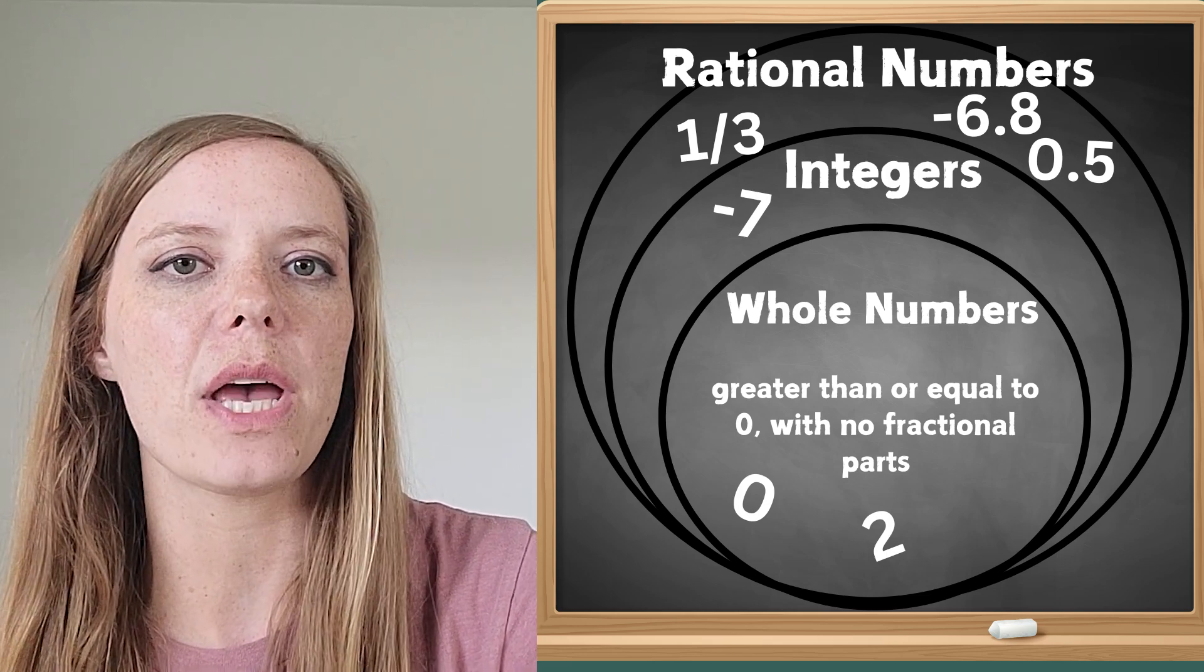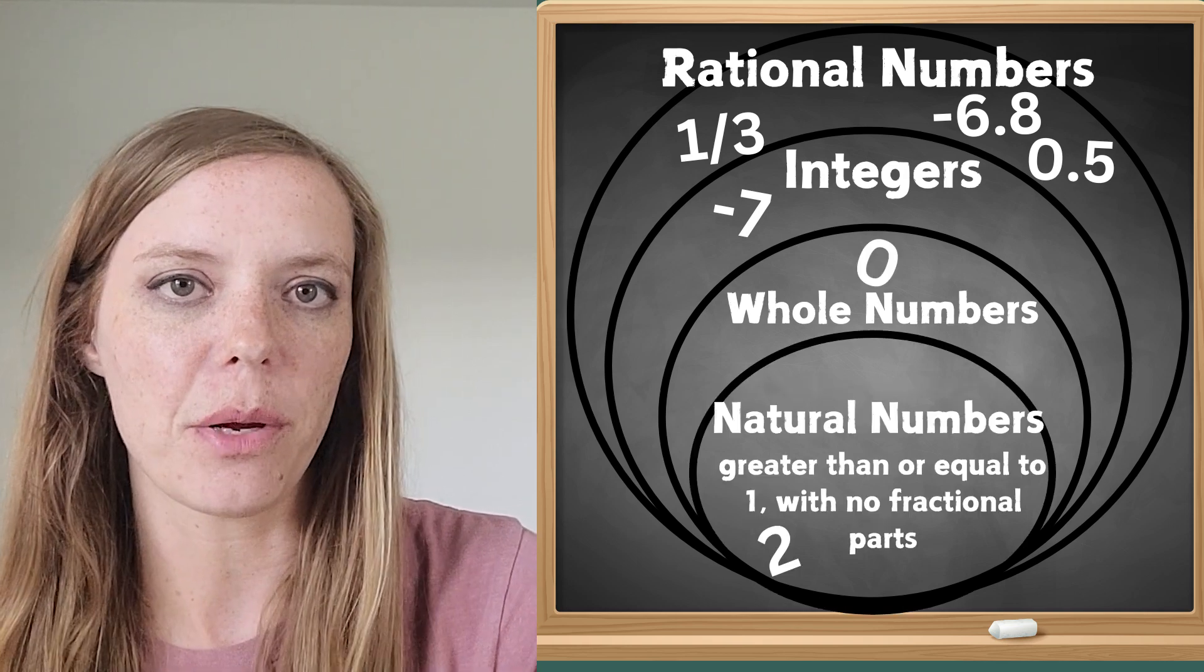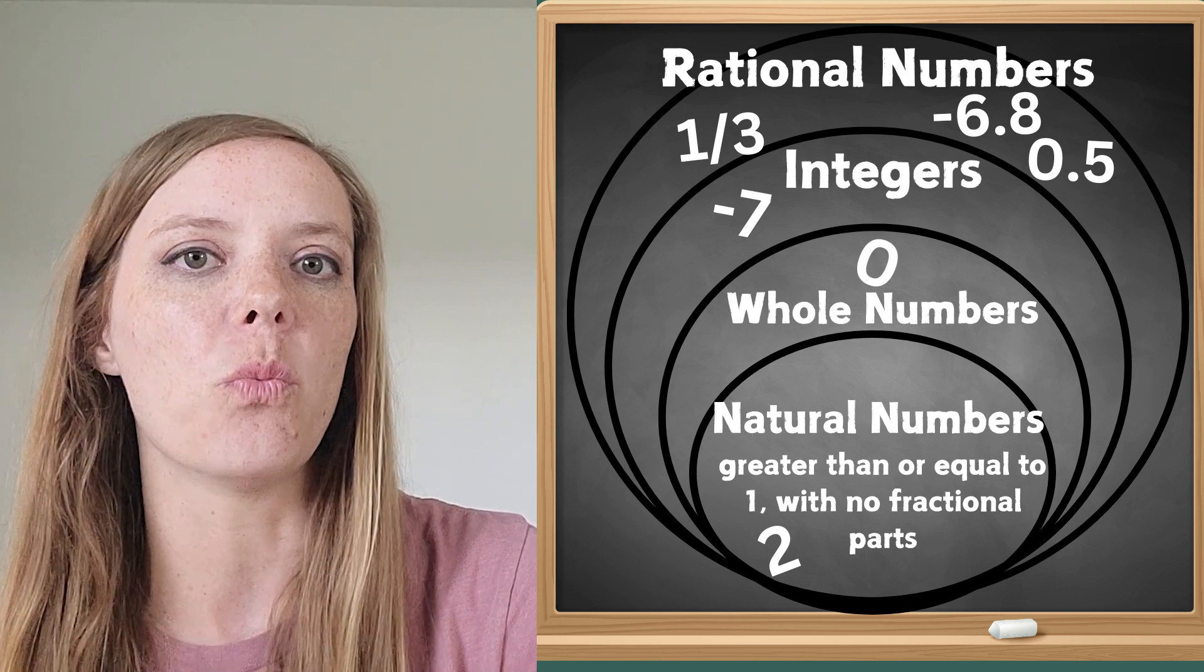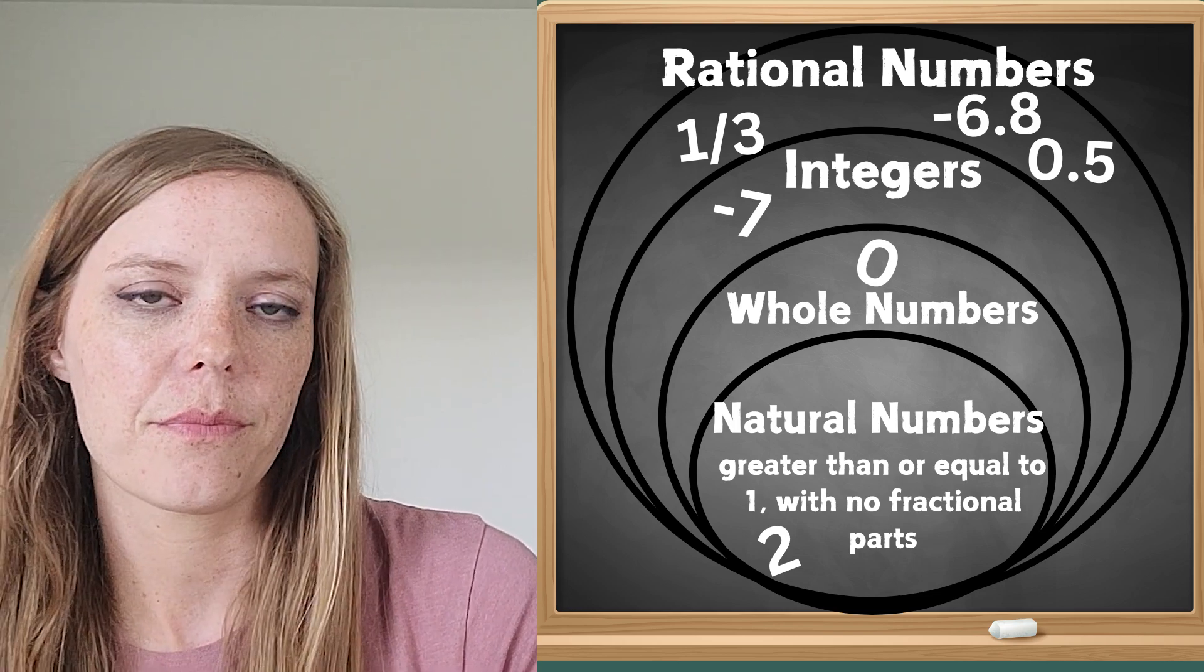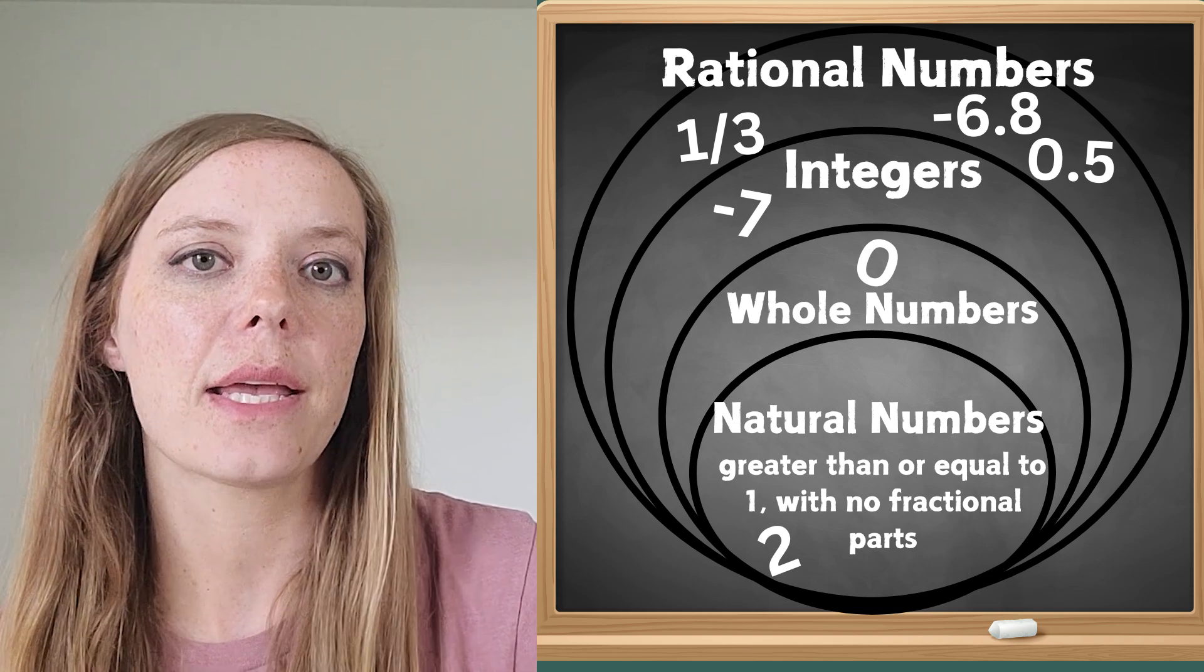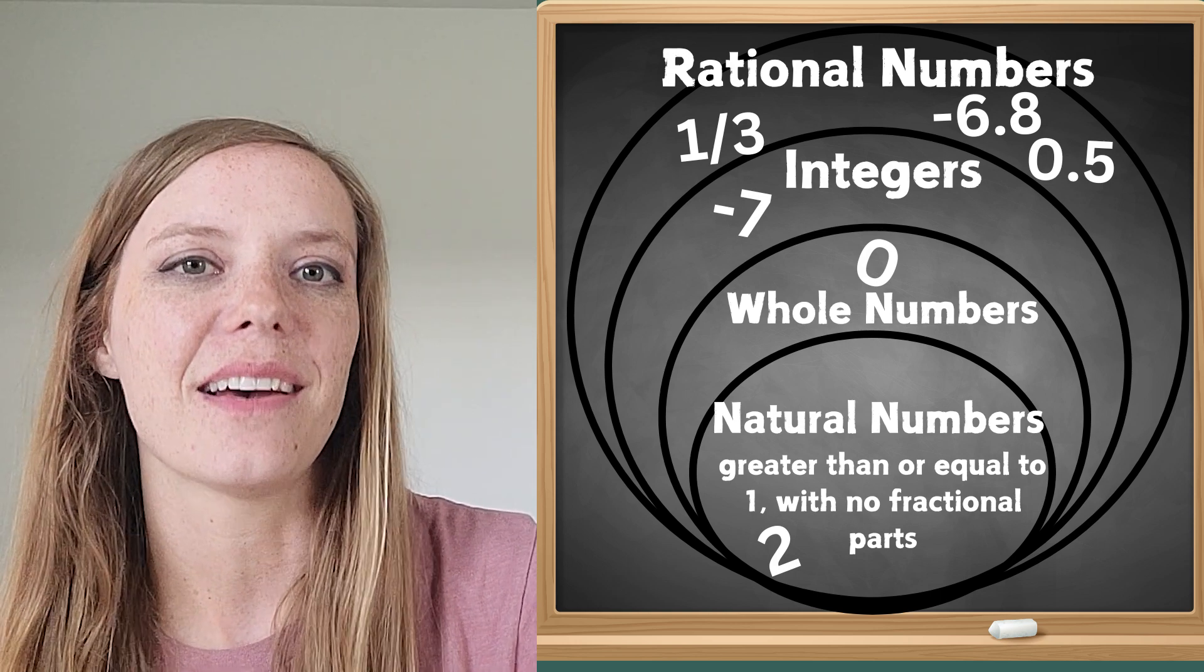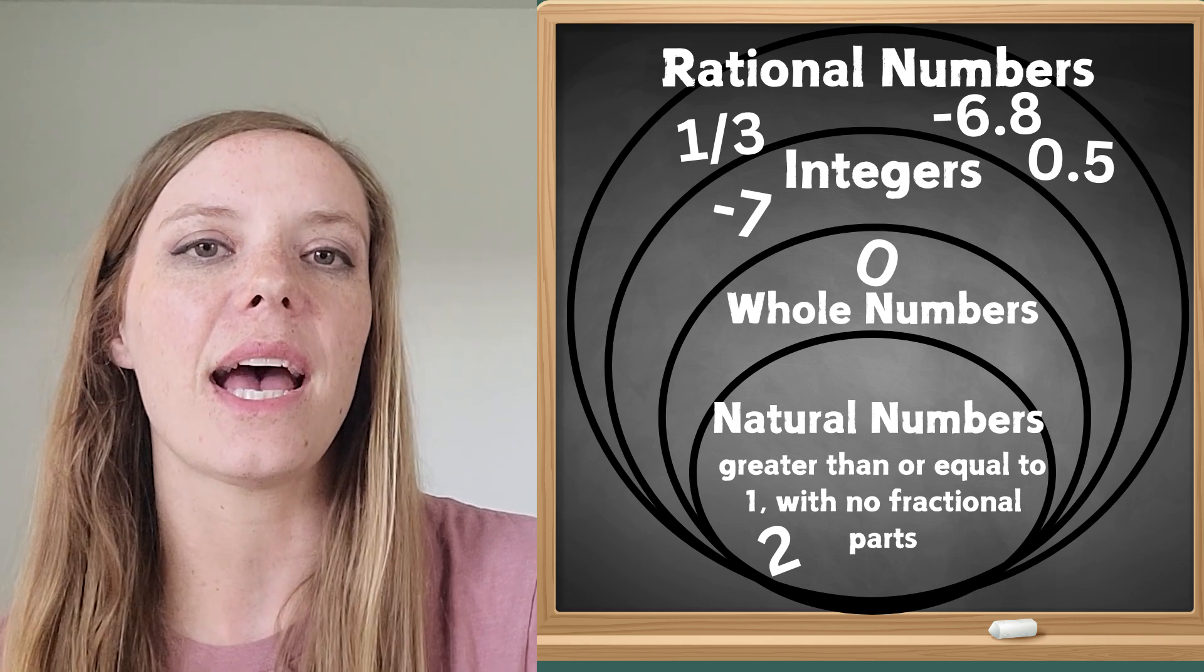All right and our last circle, the smallest one inside of the big rational numbers circle, is natural numbers. And a natural number is a whole number that is greater than or equal to 1. So this one just doesn't include the zero or negative numbers. So once again why do we think that natural numbers can be put inside of the rational numbers circle? Okay this is getting easy for you because these can all be written as a fraction.